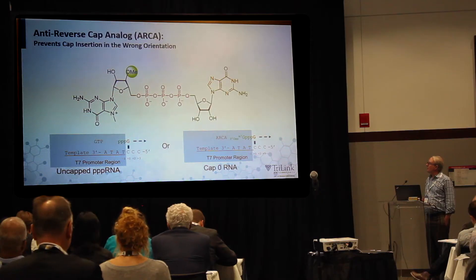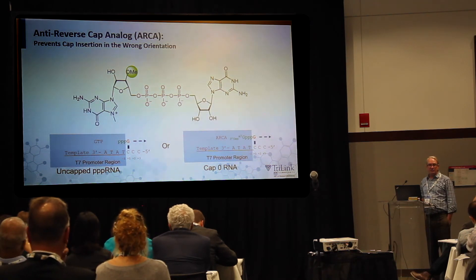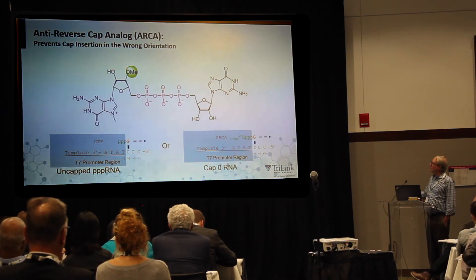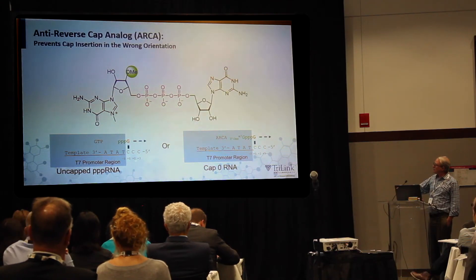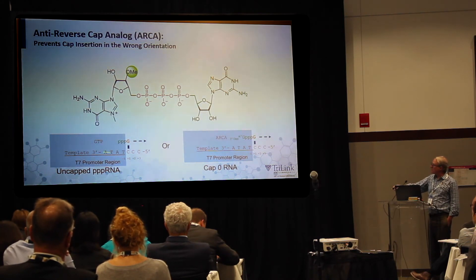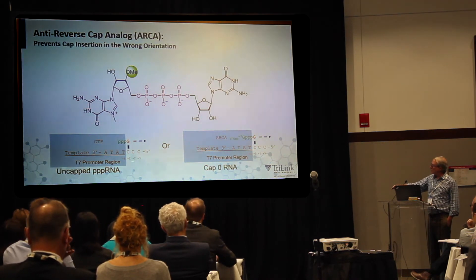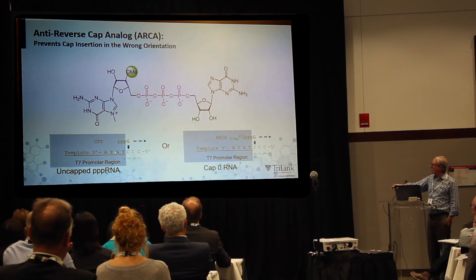The second possibility is to use a co-transcriptional capping strategy. The industry standard for the last 20 years or so has been ARCA. It's called anti-reverse cap analog because it has a 2' or 3' methyl group that prevents the RNA from elongating from that side. This forces it to go in the right direction — that was the innovation of ARCA. During a normal transcription initiation event with a T7 promoter, transcription starts at the plus one, plus two, and plus three nucleotides outside of the promoter.